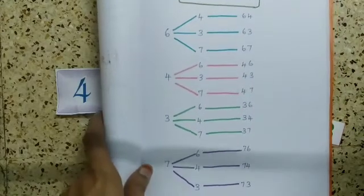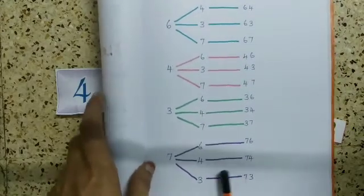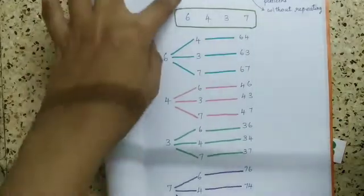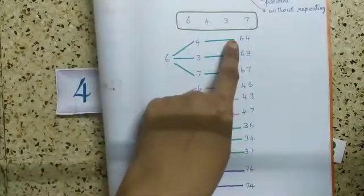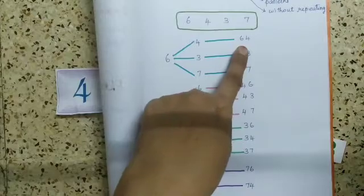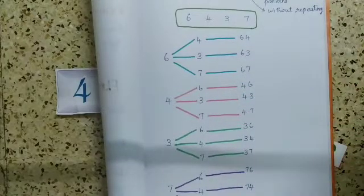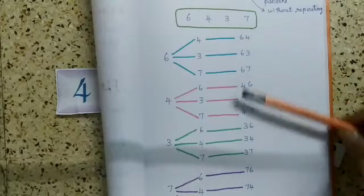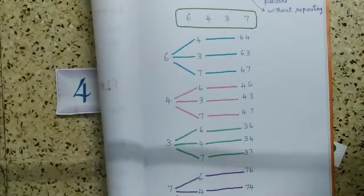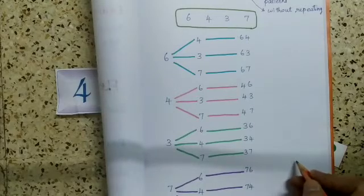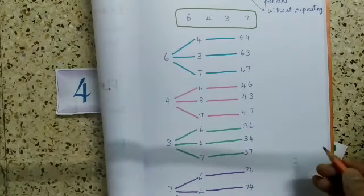So we can make at least 12 two digit numbers here. How many digit numbers we made with the two digit number? With the two digit number, we were able to make 12 sets of numbers. So this is called systematic listing. Now the answer will be we can make at least 12 two digit numbers.